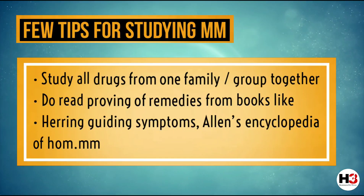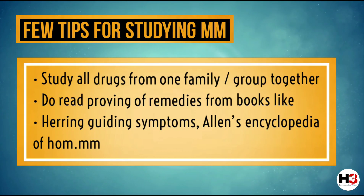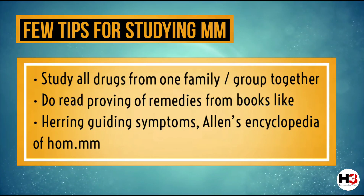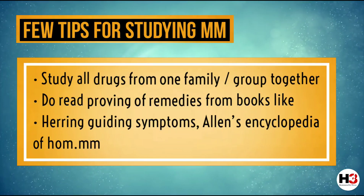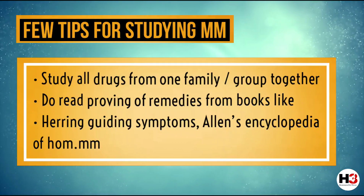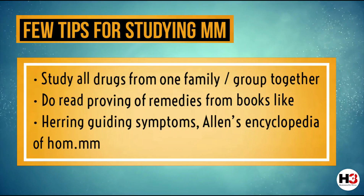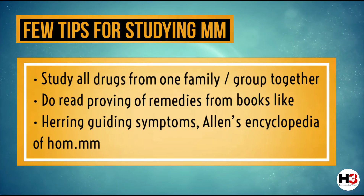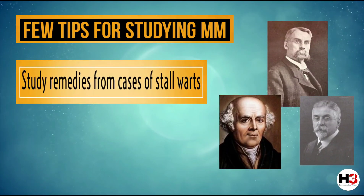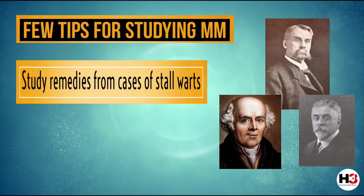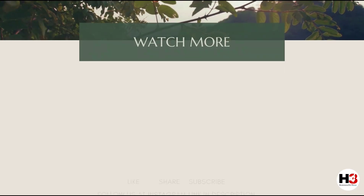The first tip is to always study drugs in groups or in families. For example, the remedies of the Ranunculaceae family should be studied together, as it will help us understand and differentiate between similar remedies. The next tip is to always read the provings of homeopathic remedies — books for this include Hering's Materia Medica or Allen's Encyclopedia of Materia Medica. Finally, we should also try to study these remedies from the various cases of the stalwarts, as that is the ultimate source for studying a remedy and applying it in clinical practice.